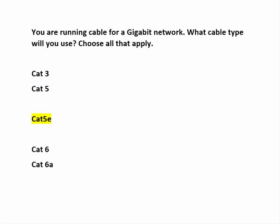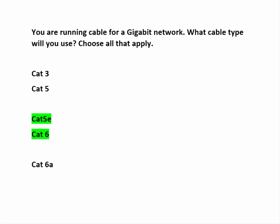CAT5e is capable of supporting higher throughput. CAT6 supports a bandwidth of 1000 MHz or 1 Gbps and is the best choice due to its construction, which decreases the amount of crosstalk on the cable. CAT6a supports 10 Gigabit Ethernet. If you were only allowed one answer it would be CAT6, but since you are allowed more than one choice, CAT5e is the second best solution. Answer this by choosing CAT5e and CAT6.